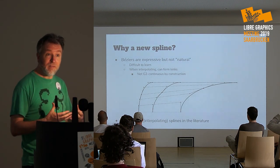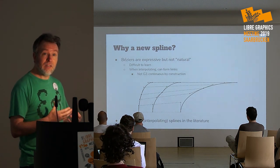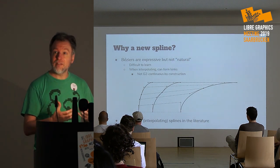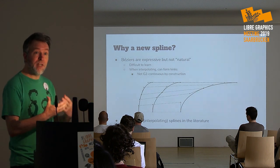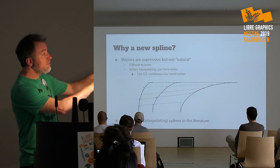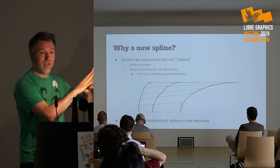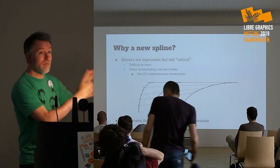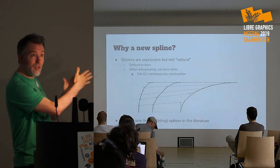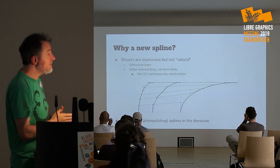It really comes down to limitations of Bezier curves. They're very expressive — a very powerful primitive for creating illustrations — but they're not easy to learn and not intuitive to control. Particularly within the context of making fonts and variable fonts, interpolation is a problem: you can have two masters that are smooth, but when you do the interpolation between them the resulting set of curves is not continuous, not smooth, and forms a kink.